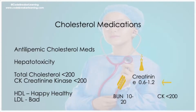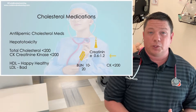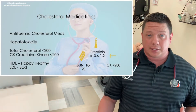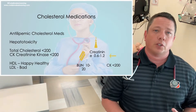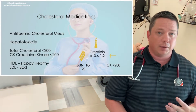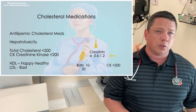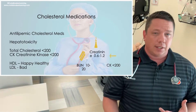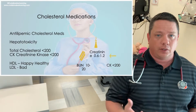The next medications are going to be your antilipemic medications — these are given for cholesterol. Your total cholesterol should be less than 200, and it's made up of your HDLs, your LDLs, and your triglycerides. Your HDLs are your happy, healthy cholesterol — the good kind.